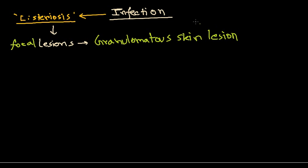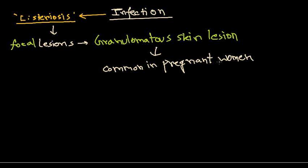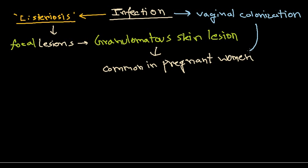Listeriosis is much more common in pregnant women, as we have already discussed, as well as in individuals who are immunocompromised. In the case of pregnant women, we can see vaginal colonization of Listeria monocytogenes.